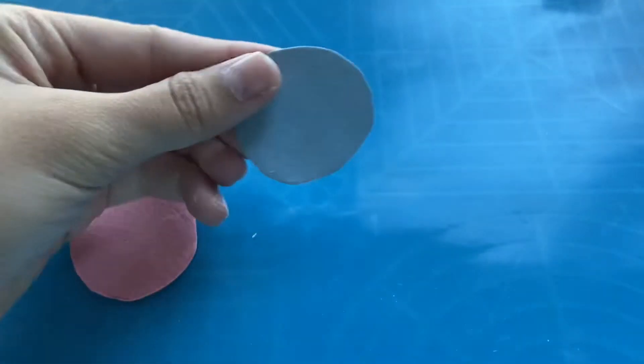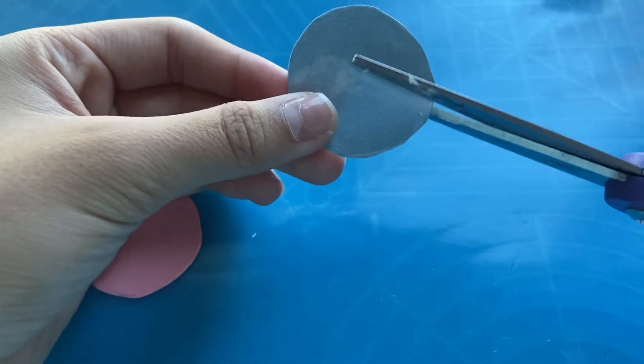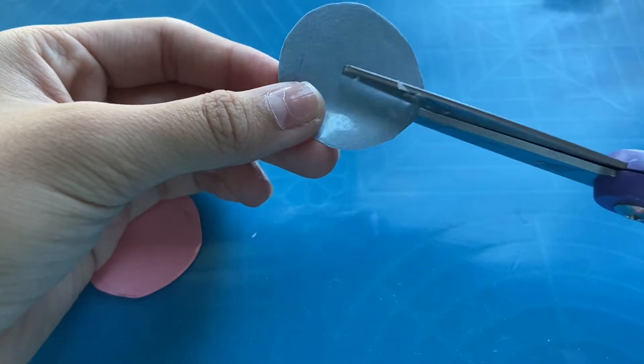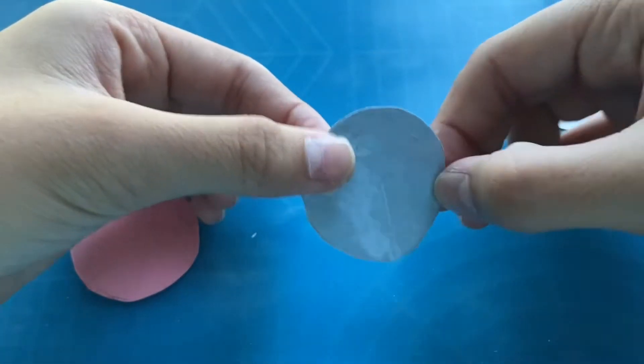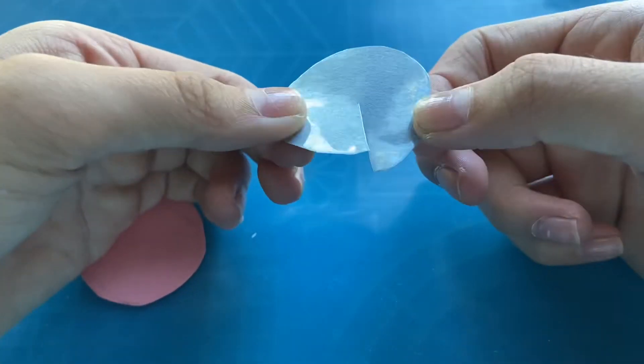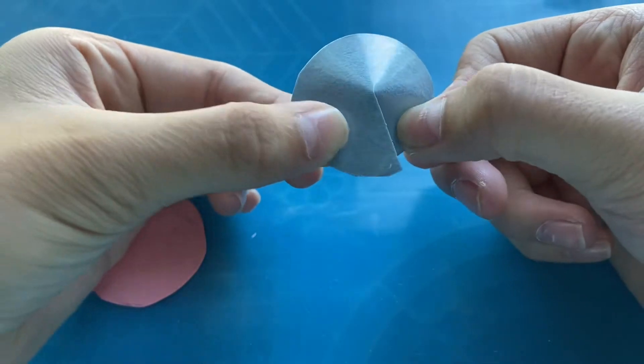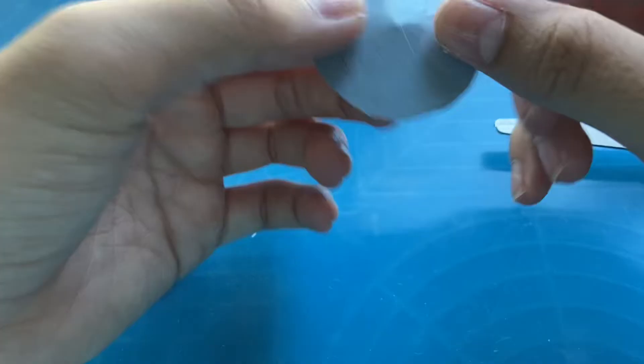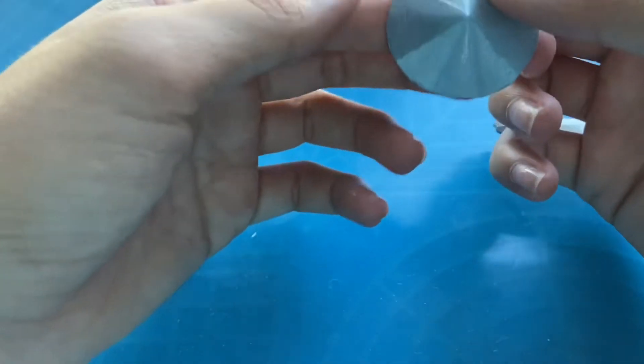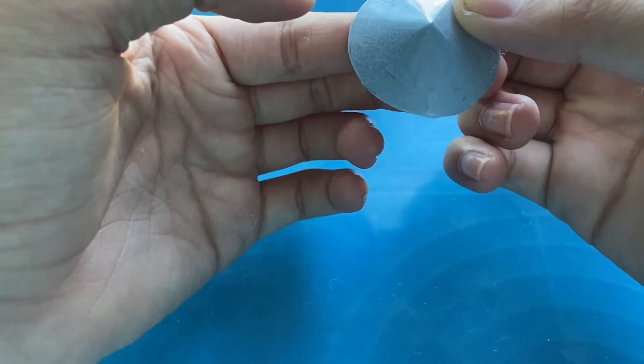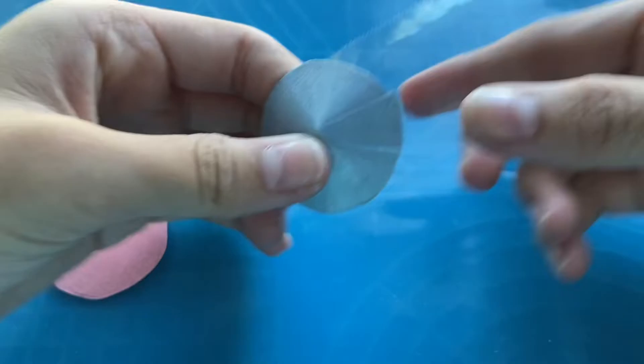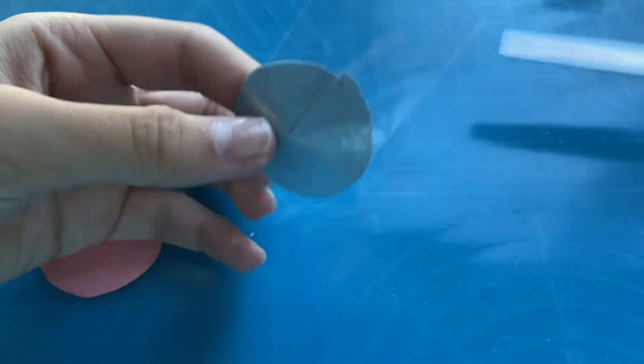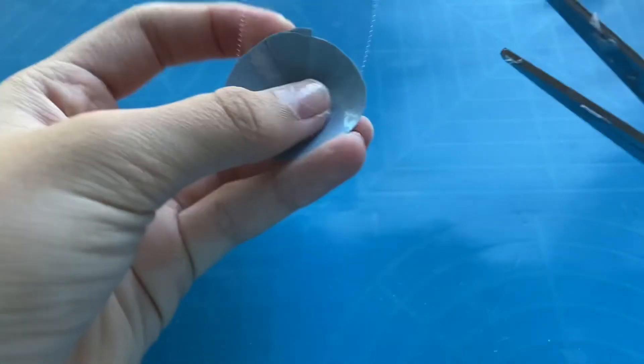So the next thing that we're going to do is you're going to take your scissors and you're going to cut right to the middle. Just like that. And then you're going to want to grab a piece of tape and you're going to fold it over. And then once you've taped it, you can go ahead and trim the excess.